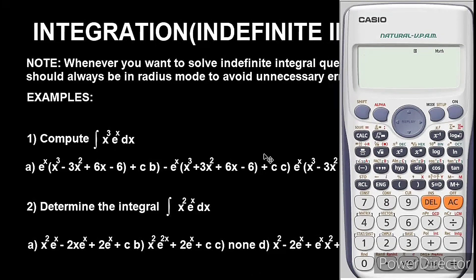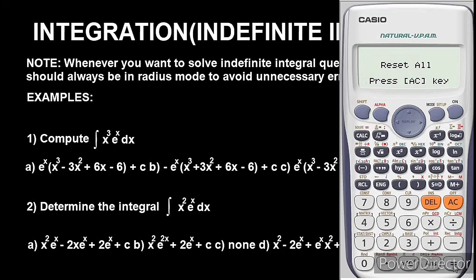The first thing we have to do is clear the calculator. The reason for clearing the calculator is to avoid unnecessary errors, because you might not remember whether you have performed a previous calculation. To be on the safe side, we clear the calculator by pressing Shift, then 9, then input the instruction — press 3, then press equals twice. We have now cleared the calculator. The next step is to put the calculator in radian mode.